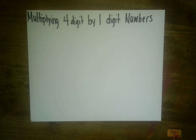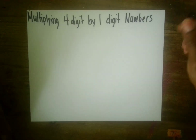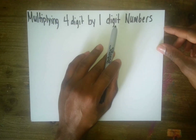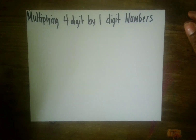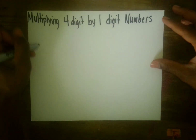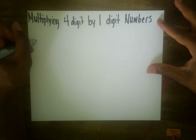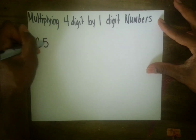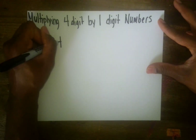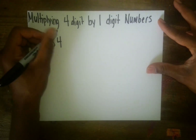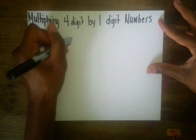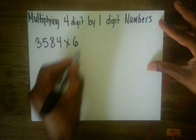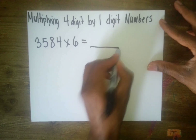Hey, thanks for joining. Today we're going to be looking at multiplying four-digit by one-digit numbers using area models. For this example, we're going to use the number 3,584 times six equals blank.